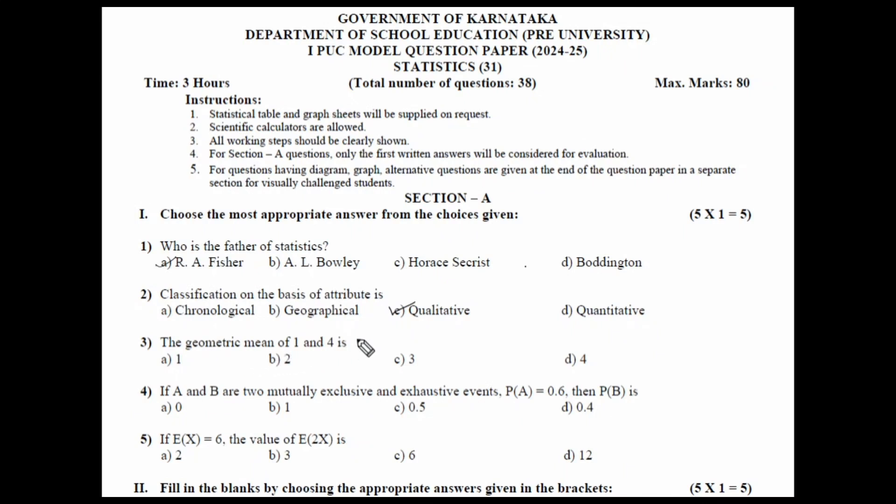The geometric mean of 1 and 4 is, so you can simply take here root of A into B, that is root of 1 into 4. So, 4 into 1 is 4, root of 4 is 2, the answer is 2.